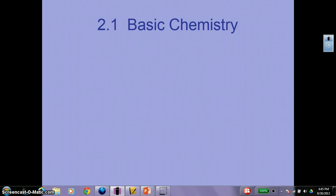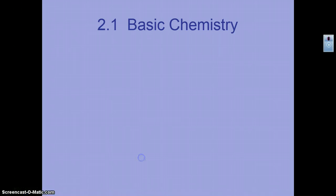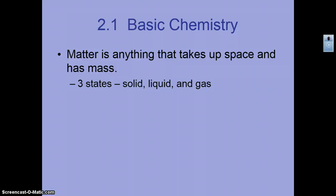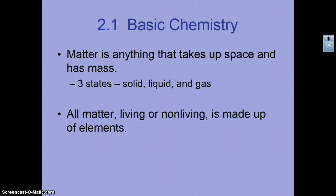Chapter two for advanced biology is going to get into some basic chemistry. A basic definition that you need to know is what matter is. Matter is anything that has mass and takes up space, and it comes in three states: solid, liquid, and gas.